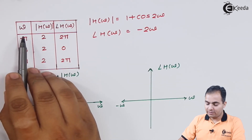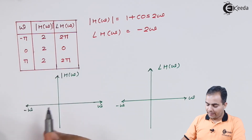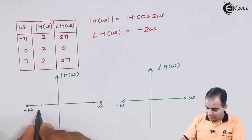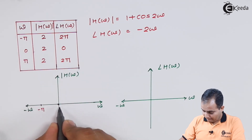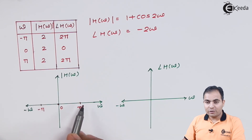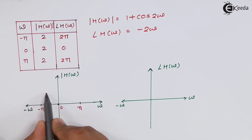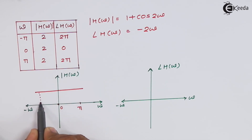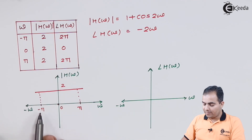Now I will substitute the omega values and draw the graph. The x-axis goes from −π to π. Since the magnitude |H(ω)| gives the constant value 2 from −π to π, we draw a constant horizontal line at 2 between −π and π.